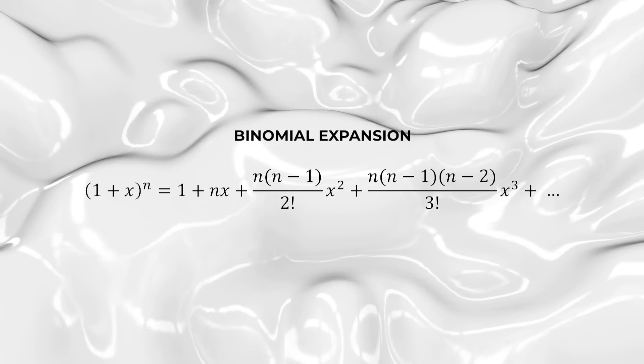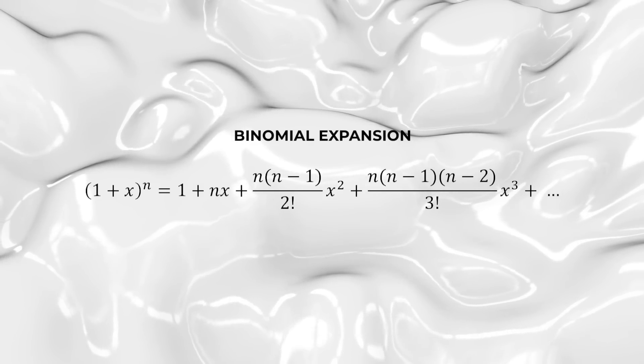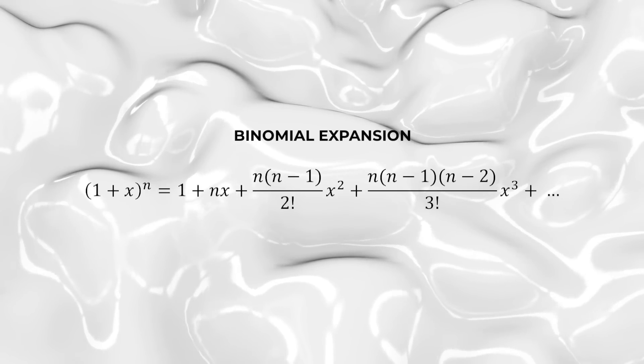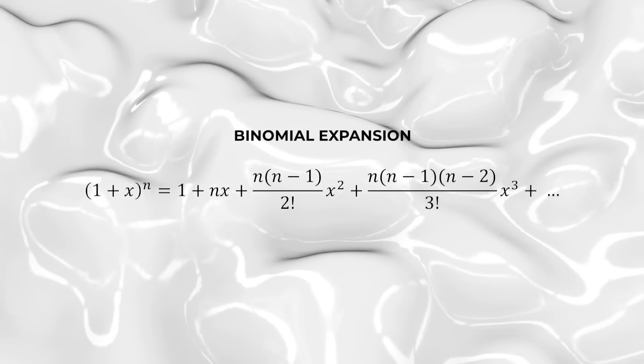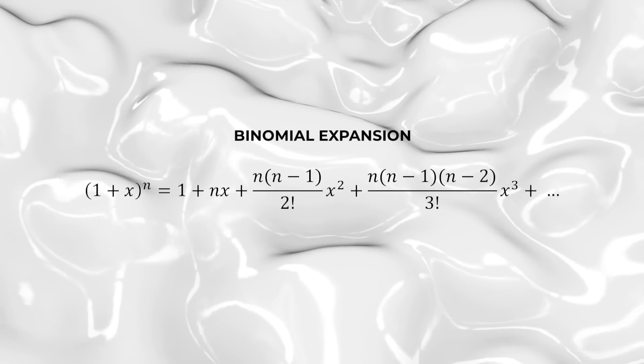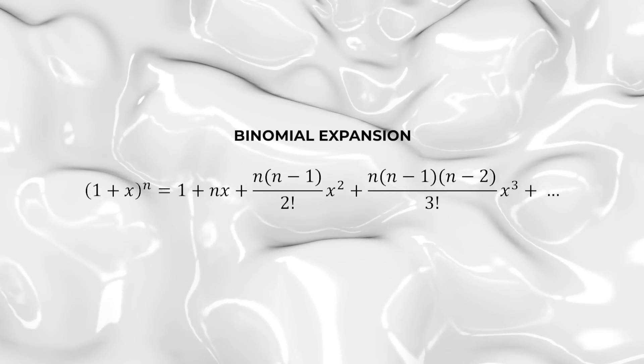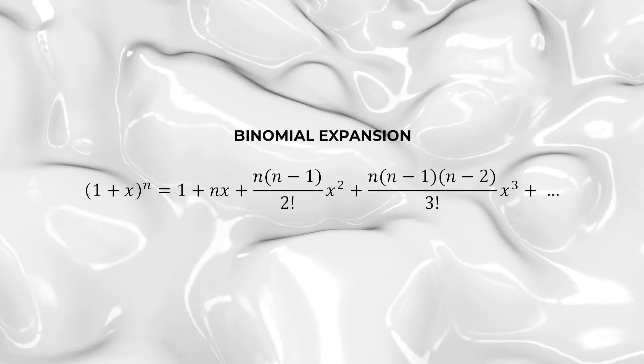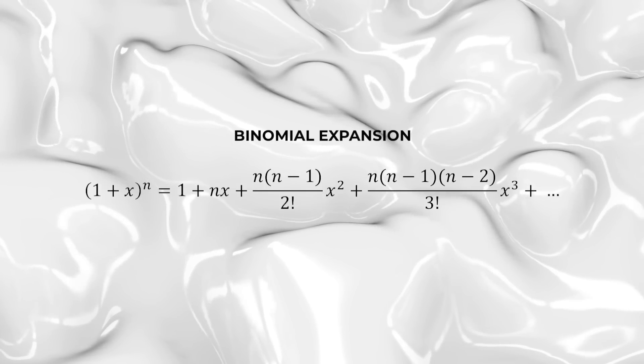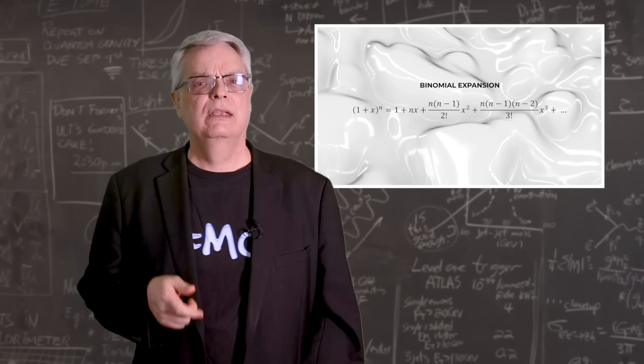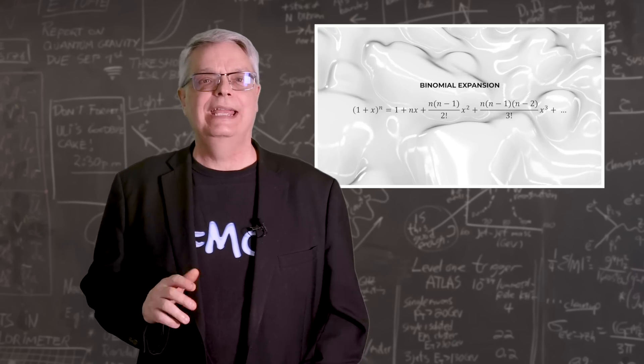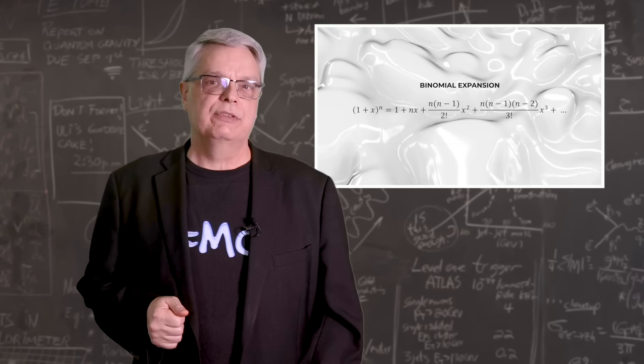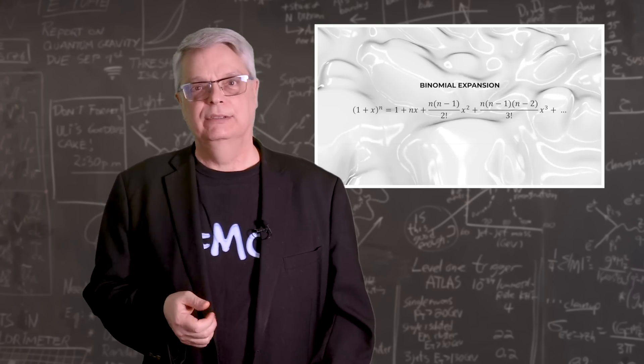The binomial expansion says that the expression 1 plus x raised to the n power can be written as an infinite sum of the form 1 plus n times x plus n times n minus 1 times x squared divided by 2 factorial plus n times n minus 1 times n minus 2 times x cubed divided by 3 factorial and so on. This equation works for any n and for all x's that are between minus 1 and plus 1. If you want to work out the derivation, well, that's up to you, but that's how it goes.